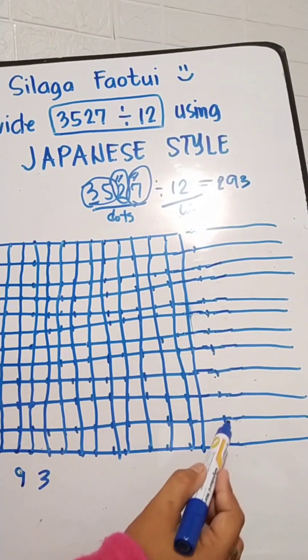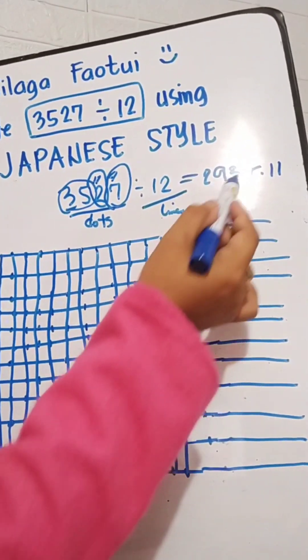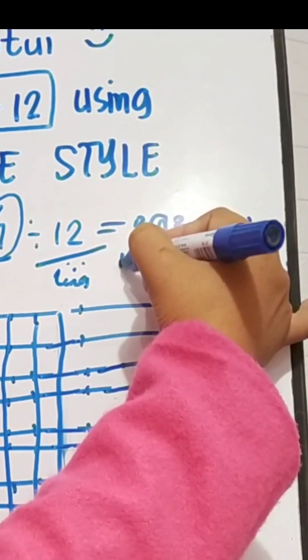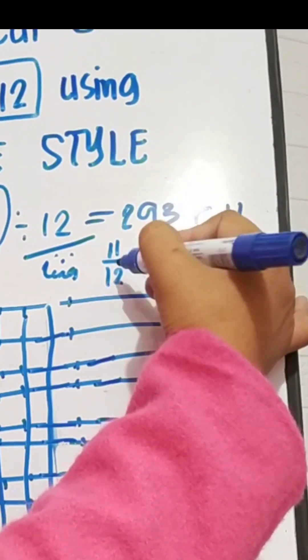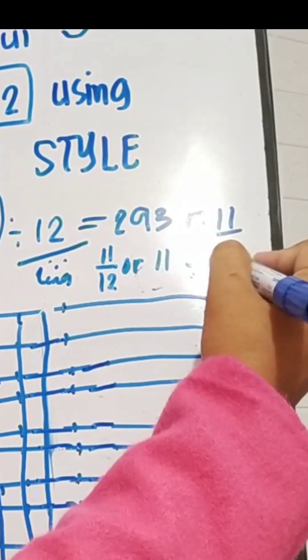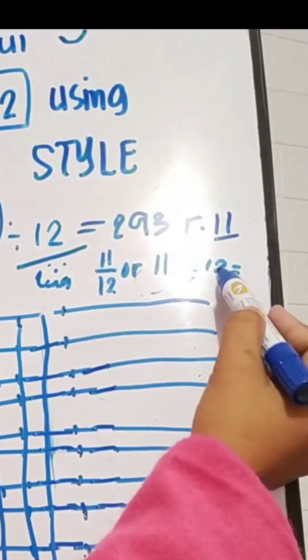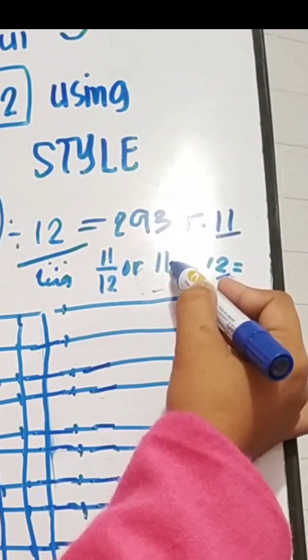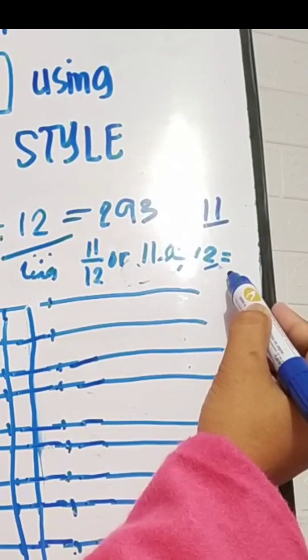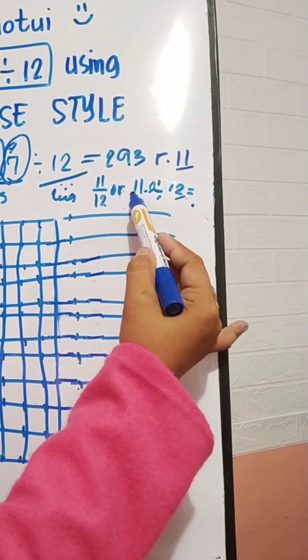11 is your remainder. But if you'd like that your remainder would be a decimal point, for your remainder we have here 11, and then you will have your denominator 12 for your divisor, or you will write 11 by 12. Since 11 is so small to distribute to 12 people, so we will add another zero here, 11.0, as well as your answer would have also a decimal point.